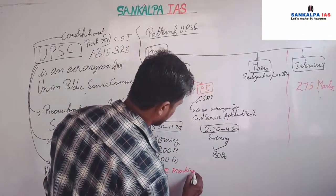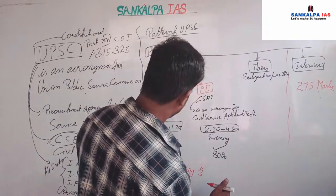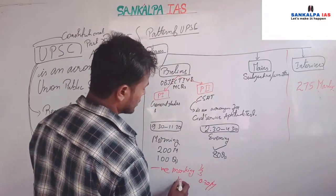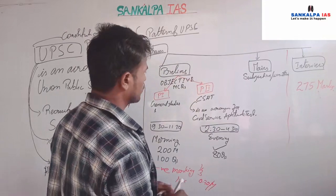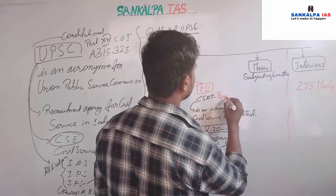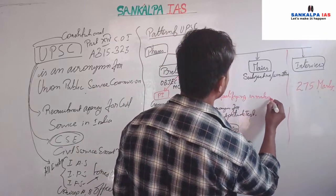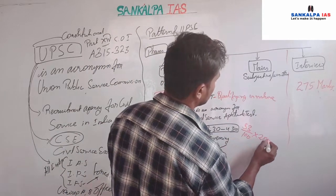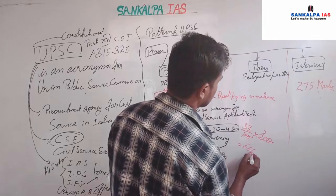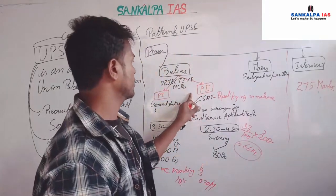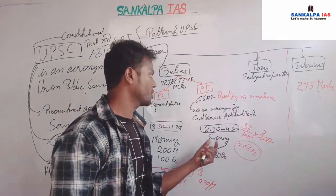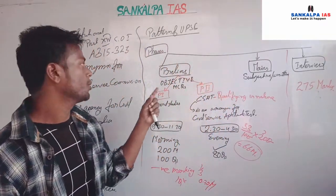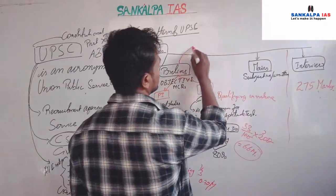There is negative marking in both papers — in General Studies as well as in CSAT. A negative marking of one-third, equal to 0.33 marks, will be deducted for each wrong answer. CSAT is qualifying in nature — you have to secure 33 percent of 200, which equals 66 marks. You are not allowed to sit in Mains unless you have qualified in Prelims.